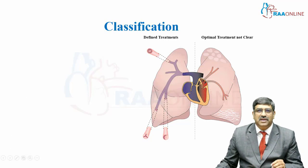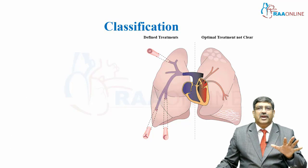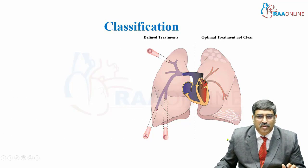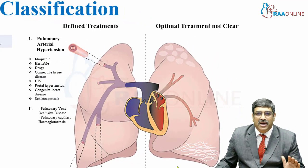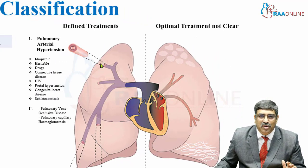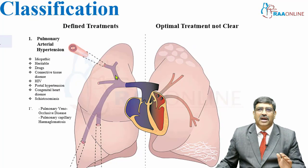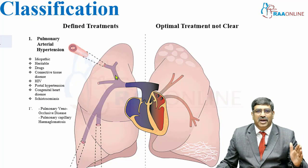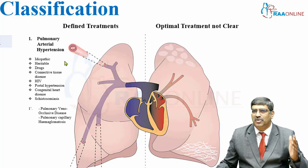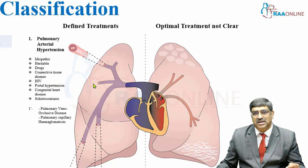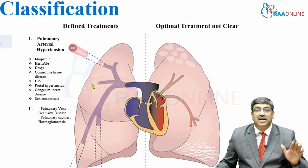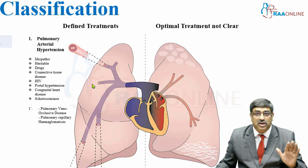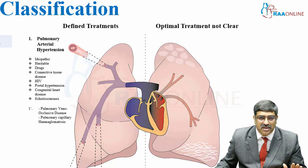Coming to the classification, it is divided into five major groups. Group one is what is meant by pulmonary artery hypertension, where the pulmonary artery is involved with various diseases. The most common causes are idiopathic, drugs, congenital heart disease, and connective tissue disorder. This is classically what is meant by pulmonary artery hypertension.